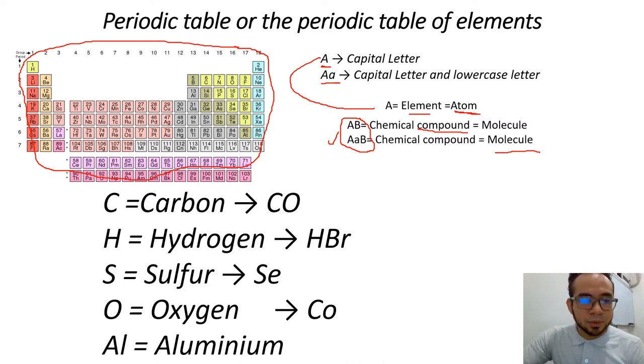For example, letter C is an element, it's a symbol, but its name is carbon. But when I see C and O, or two capital letters, this is an element, and this is another element, it's carbon and oxygen. This is a molecule, and this is an element or an atom.